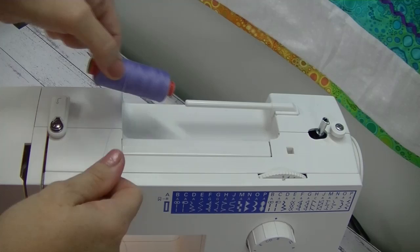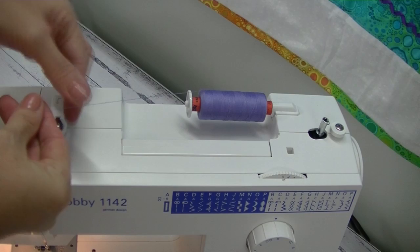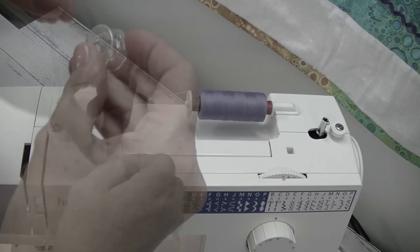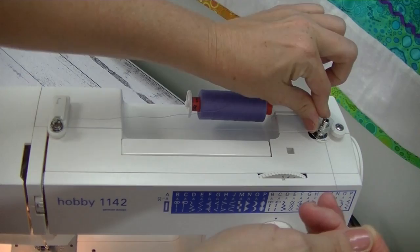To wind a bobbin, I'm going to place the thread on the horizontal spool pin and then use my spool cap just to push it into place. This is going to keep it nice and secure for me. Then once I've done that, bring my thread up and around the tension disc at the top here, so that's for our bobbin tension. I like to thread through the hole in the bobbin itself, bring the thread to the top, push that over the bobbin spindle at the top, push that over to the right.